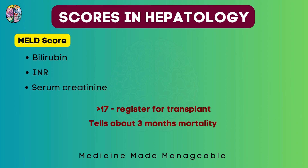The MELD score also tells us about the 3-month mortality. To explain prioritization: if there are 2 patients and both of them have liver damage, but one patient has a score of 18 and the other has a score of 35 which is very high, and if we have only 1 liver to give, we will prefer to give the liver to the patient with the higher score because his condition is worse.